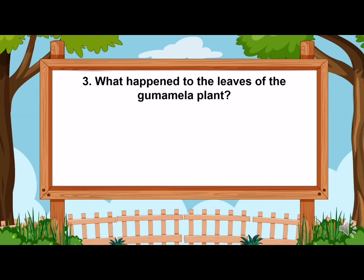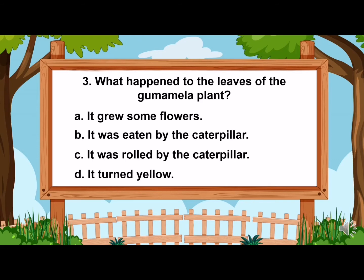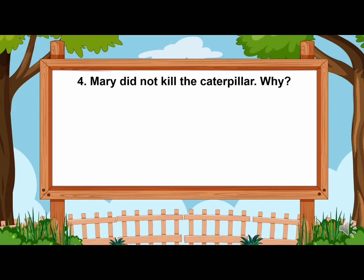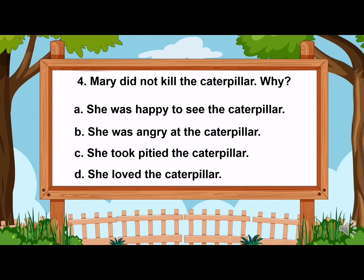Question number three: What happened to the leaves of the gumamela plant? Letter A, it grew some flowers. B, it was eaten by the caterpillar. Letter C, it was rolled by the caterpillar. And D, it turned yellow. Question number four: Mary did not kill the caterpillar. Why? Letter A, she was happy to see the caterpillar. Letter B, she was angry at the caterpillar. Letter C, she took pity on the caterpillar. And letter D, she loved the caterpillar.